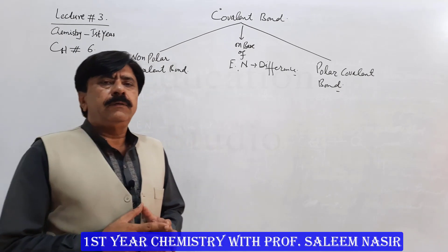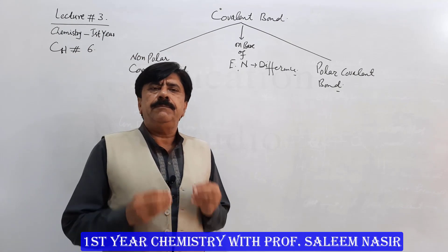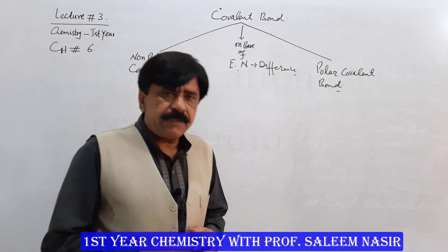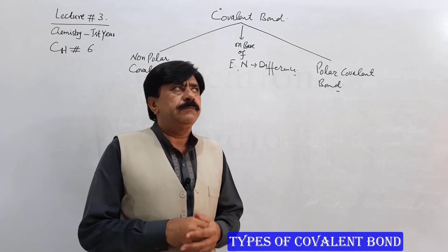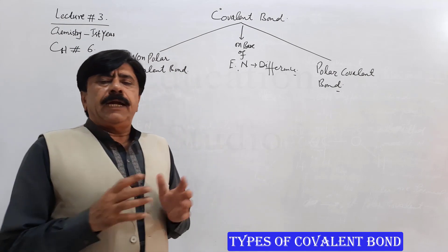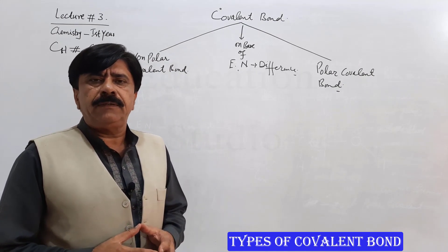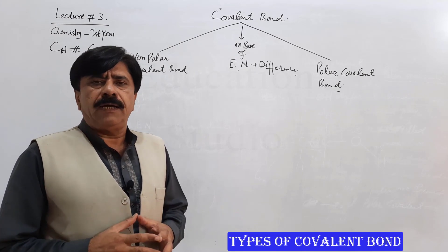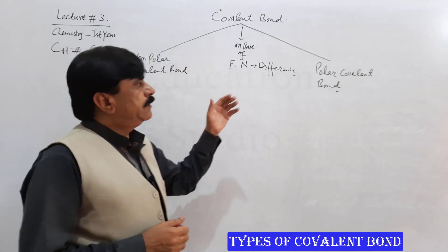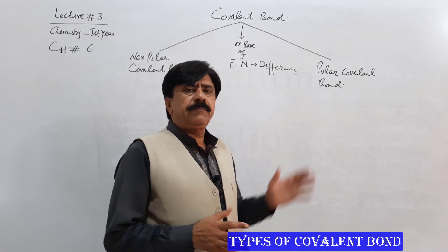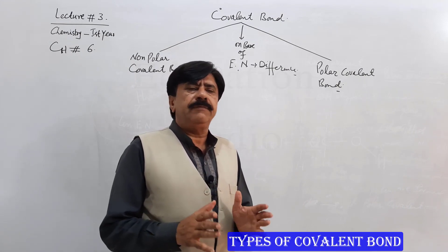Now we are going to study the types of covalent bond on the basis of the difference in electronegativity between the two bonded atoms. On that basis, we divide the covalent bond into two types: the nonpolar covalent bond and the polar covalent bond.